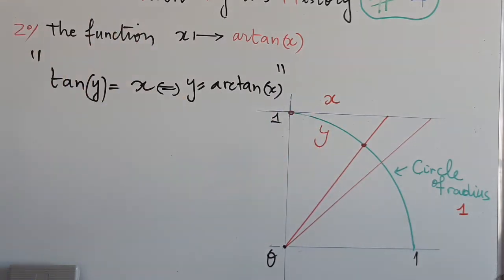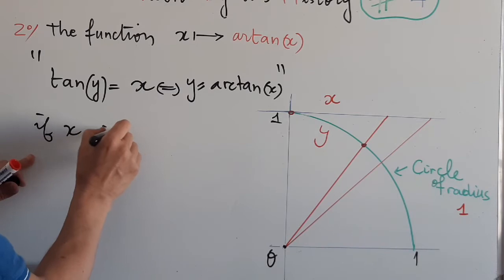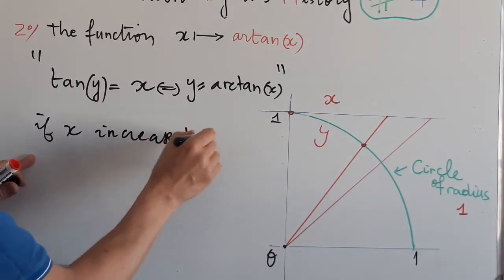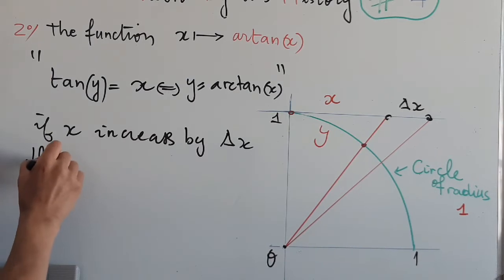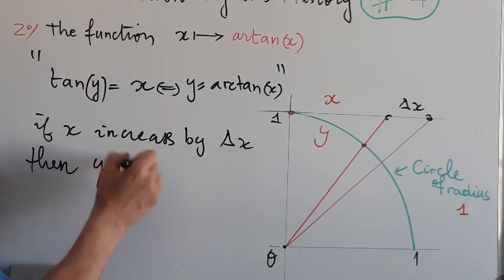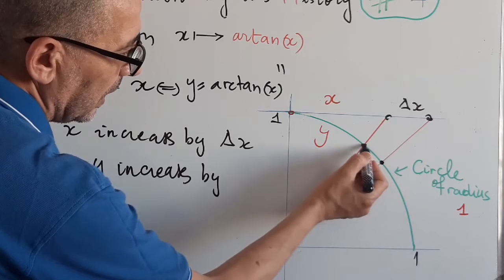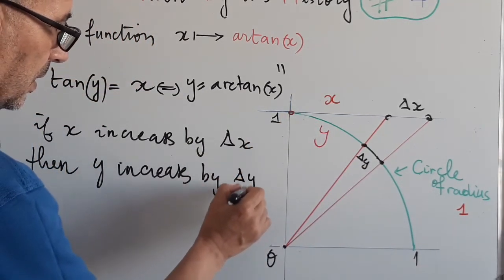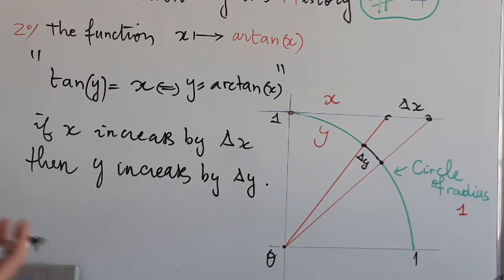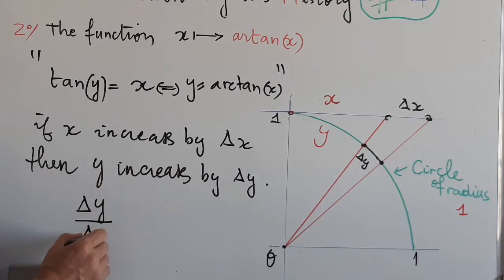Now, if x increases by delta_x — say this segment — then y will also increase by delta_y, denoted by this arc here. Our objective is to find and make explicit the ultimate ratio delta_y over delta_x. This is our problem.